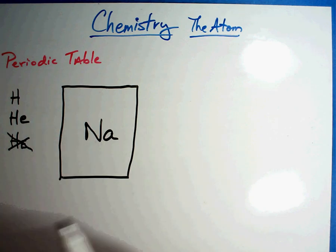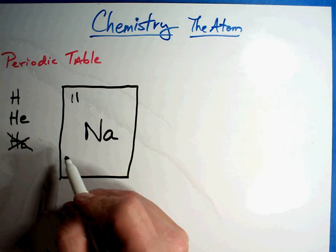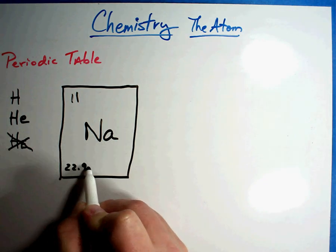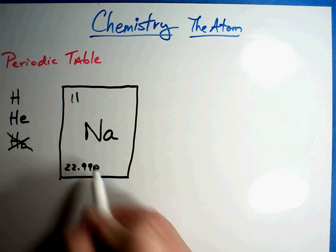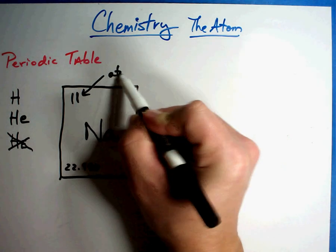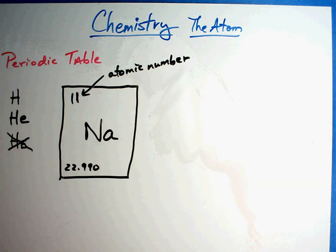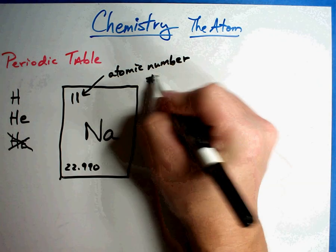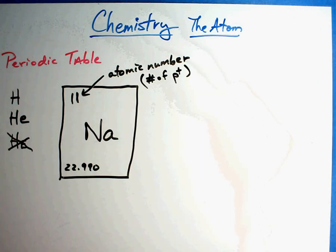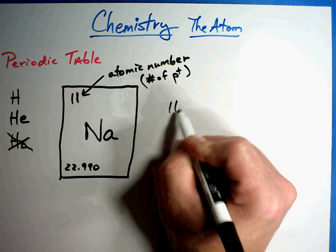And then there's numbers in the boxes. In this case, you're going to have a number like this, 11 and then 22.990. Well let's talk about these numbers and what they're actually used for. First, this number is called the atomic number. The atomic number is the smaller of the two numbers. By definition, it is the number of protons in that atom. So in this case, sodium has 11 protons.